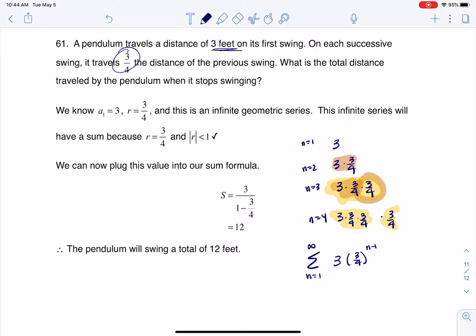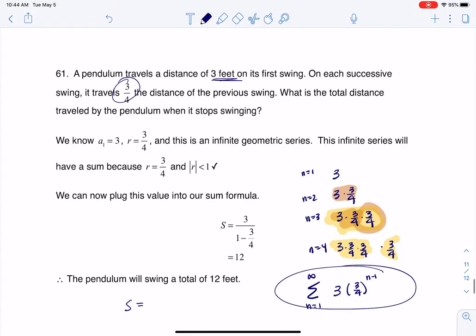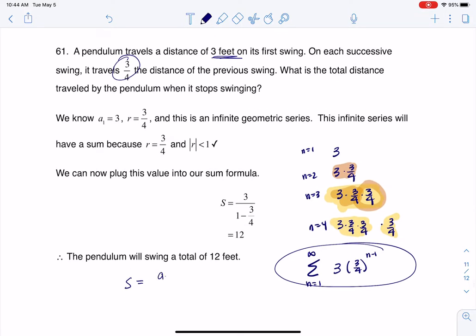I'm going to do that infinitely. I mean, technically if you're thinking about that pendulum it would eventually stop, but we want to see how far it traveled in total. Well, if I have a geometric series, I can use that formula for the—or at least if I have an infinite geometric series, we do a₁ over one minus r.